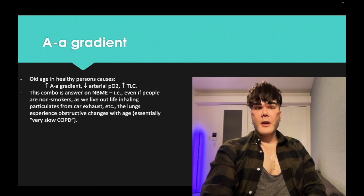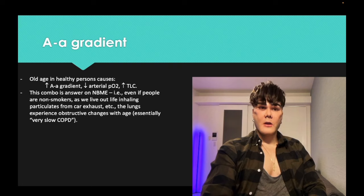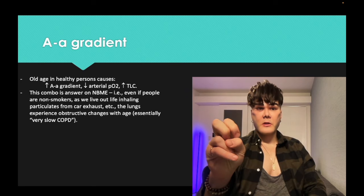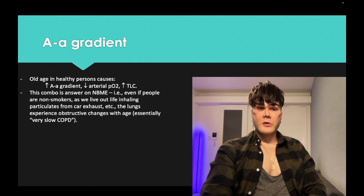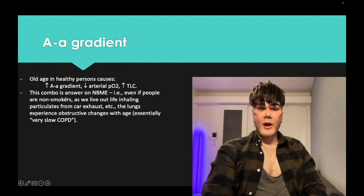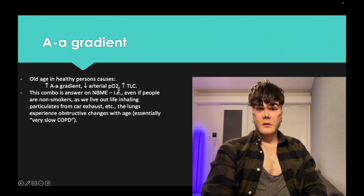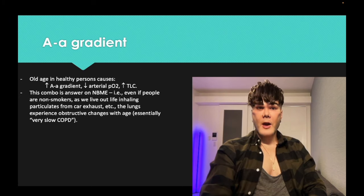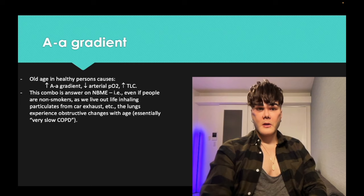Healthy people over a lifetime acquire very slow COPD due to aggregate inhalation of particulates like car exhaust or secondhand smoke. If forced to choose arrows for a healthy 70-year-old versus a 20-year-old, choose arrows consistent with obstructive lung disease: high AA gradient, decreased arterial PO2, increased total lung capacity due to air trapping, super high residual volume.